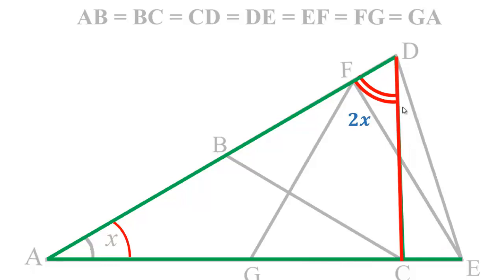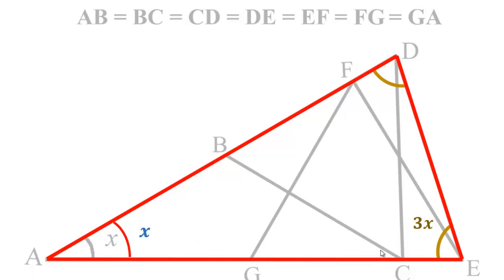Now side DC equal to side DE. Therefore both angles DCE and DEC are equal to 3X. So you can see that in triangle ADE we have angle DAE equals to X and angle DEA equal to 3X. The problem can be solved if we can find the angle ADE.